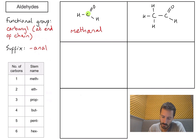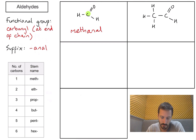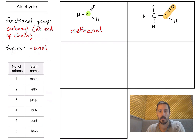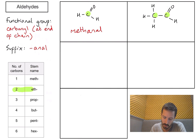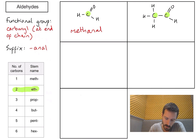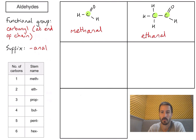Second example: I can see the carbonyl functional group at the right-hand side of the molecule, on the end of the chain, so it's definitely going to be an aldehyde. Counting the carbons in the main chain — one, two — the stem part of the name is going to be 'eth'. Adding the suffix '-al', I get ethanal.